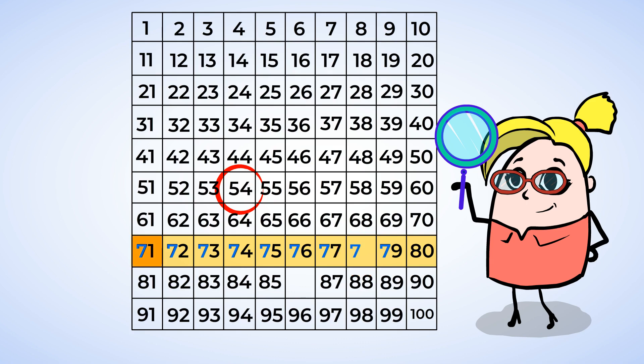71, 72, 73, 74, 75, 76, 77, 78. The missing number is 78. So we write a 7 in the tens place and an 8 in the ones place.